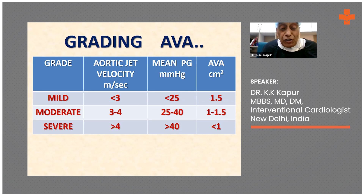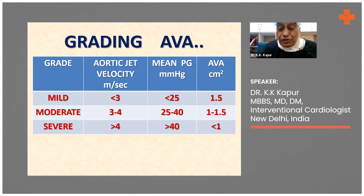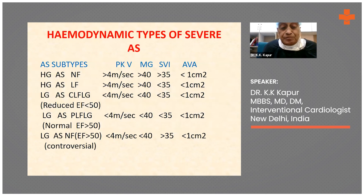Severe aortic stenosis is if the aortic jet peak velocity is more than 4 meters per second — and if you do 4V squared, that means more than 64 millimeters of mercury — the mean pressure gradient is more than 40 millimeters of mercury, and aortic valve area is less than 1 centimeter squared.